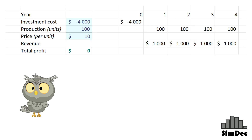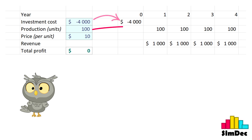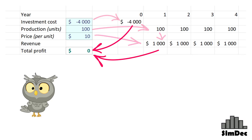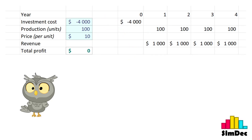Let's take a very simple example. A $4,000 investment lets us produce 100 units annually for 4 years and sell them at $10 price. The result of our calculation – total profit is zero. Now let's build that Tornado diagram by changing each factor ±50%.